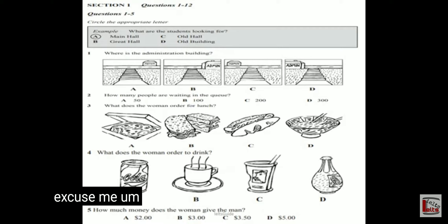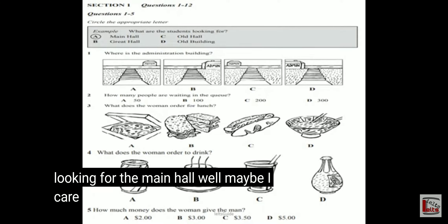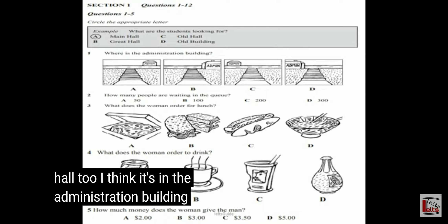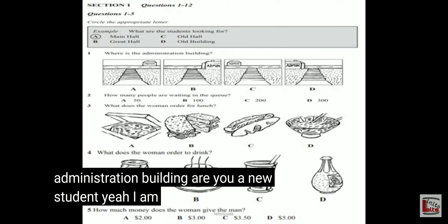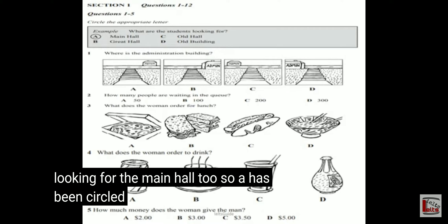Excuse me, can you help me? I was looking for the main hall. Maybe I can, actually. I'm looking for the main hall, too. I think it's in the administration building. Are you a new student? Yeah, I am. The man says he's looking for the main hall, too. So A has been circled.